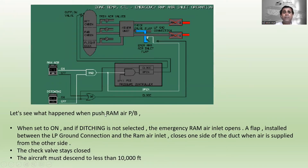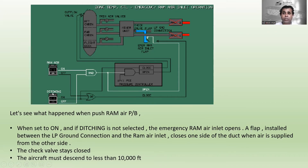When the RAM AIR pushbutton is set to ON and ditching is not selected — meaning ditching is in the OFF position — the emergency ram air inlet opens. A flap installed between the low pressure ground connections and the ram air inlet closes one side of the duct when air is supplied from the other side.